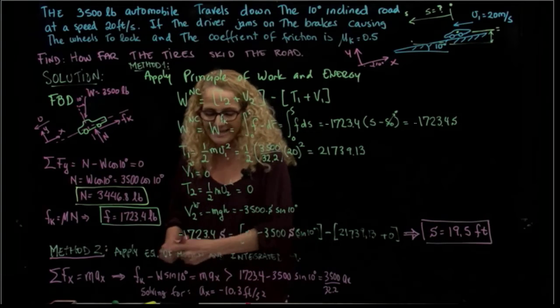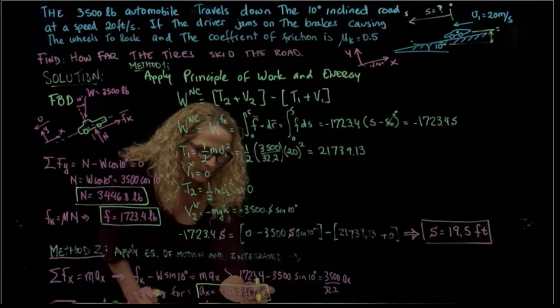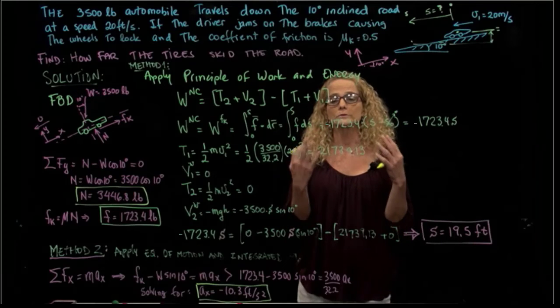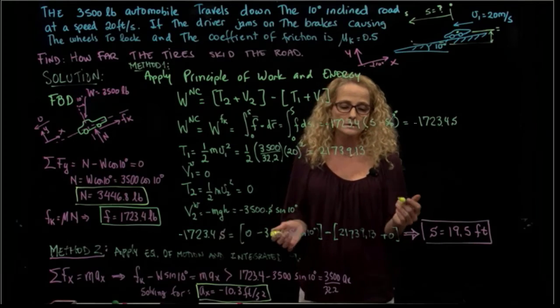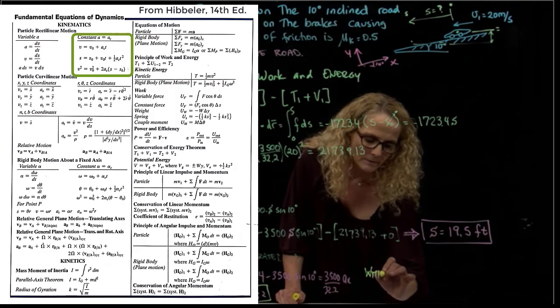And AX is equal to, solving for AX, gives me an acceleration of negative 10.3 feet per second squared. So I'm decelerating, that's why the negative sign. Having the acceleration, and if we consider the acceleration to be constant,